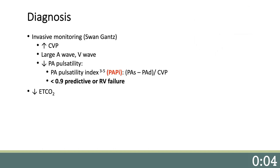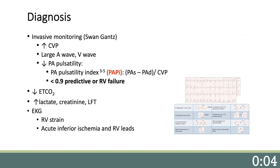Other markers of low cardiac output, such as reduced end-tidal CO2 especially in relation to the measured CO2, can be useful at the bedside. Elevated lactate, creatinine, and LFTs, and low glucose are markers of end-organ damage. An EKG can be helpful in diagnosing arrhythmia, RV strain, and as demonstrated on this EKG, inferior ischemia.